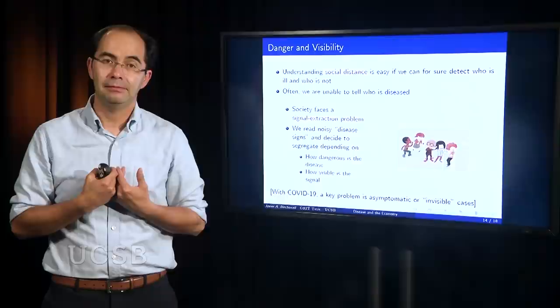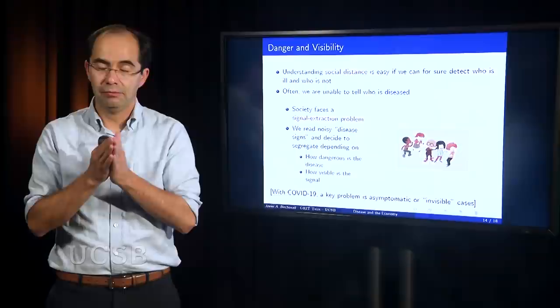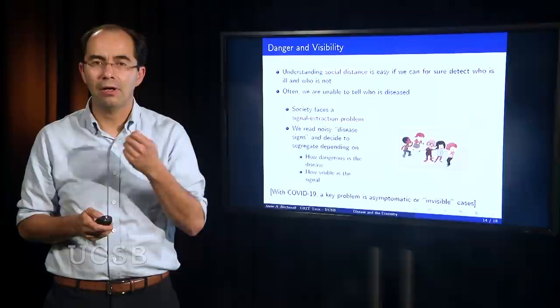Now, the way we respond to a world in which there is uncertainty is different. And we tend to be very risky. Risky here means we deal with disease along two, characterize disease along two particular dimensions. How dangerous is the disease and how visible are the signals that we get from disease. So when we face uncertainty, the way we tend to regulate distance, the way society tends to regulate that, is by having a better safe than sorry approach.